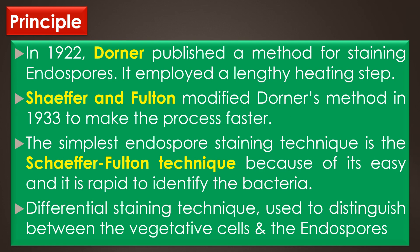The next is principle. In 1922, Dorner published a method for staining the endospores, but that method employed a lengthy heating step. So Schaffer and Fulton modified Dorner's method in 1933 to make the process faster. In basic laboratories, the simple endospore staining technique is the Schaffer-Fulton technique because of its efficiency and it is rapid to identify the bacteria and the endospores. Endospore staining is a differential staining technique used to distinguish the vegetative cells and the endospores.